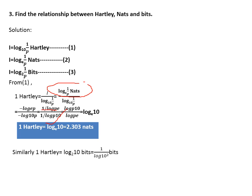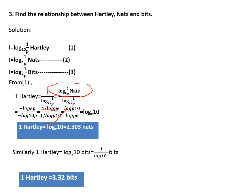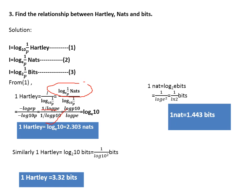Similarly, 1 Hartley = log₂(10) bits = 1 / log₁₀(2) bits = 3.32 bits. The relationship between nats and bits: 1 nat = log₂(e) bits = 1 / logₑ(2) = 1.443 bits. These conversions are very important when converting from Hartley to nats, nats to bits, and so on. Remember: 1 Hartley = 2.303 nats, 1 Hartley = 3.32 bits, and 1 nat = 1.443 bits. Thank you.